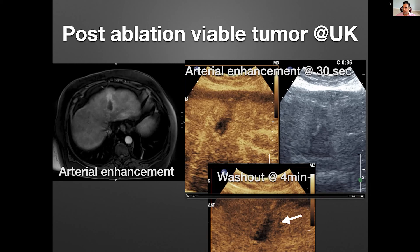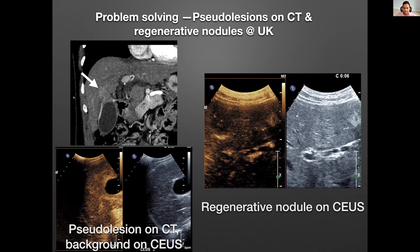That rind arterially enhanced around a cavity which is already dead, and then that rind shows mild washout. So we called it viable tumor. They went in and re-ablated it. This is a good problem-solving tool even after MR is done, but it's not fully helpful in every case — due to motion or other factors where you cannot call viable tumor — and then you can do contrast-enhanced ultrasound.